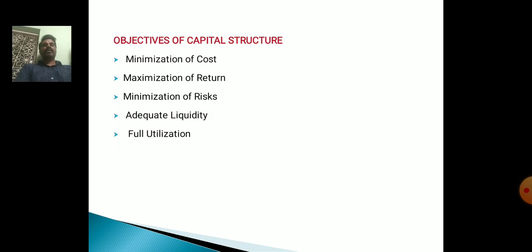Objectives of Capital Structure. The following objectives of Capital Structure are as follows: First, Minimization of Cost. Next, Maximization of Return. Next, Minimization of Risk. Next, Adequate Liquidity. Last, Full Utilization.